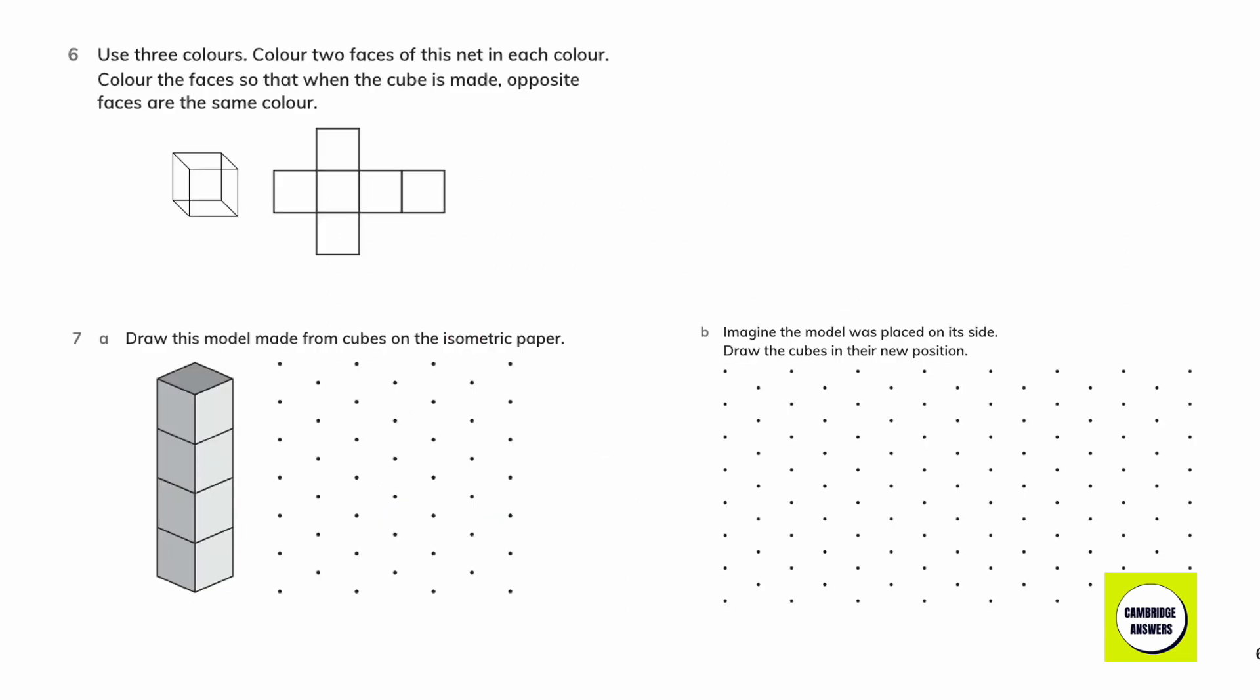Use three colors. Color two faces of this net in each color. Color the faces so that when the cube is made, opposite faces are the same color. Green, blue, yellow. Blue, yellow, green.